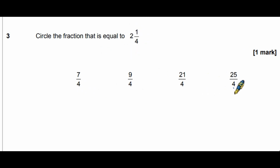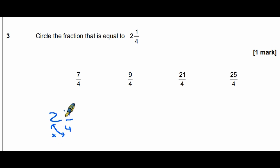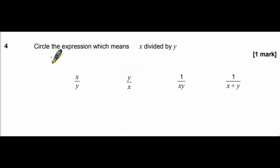These are all improper fractions with quarters on the bottom, so we're being asked how many quarters are in 2 and a quarter. We have one quarter already. To find how many quarters are in the two whole ones, we multiply 2 by 4 to get 8, then add the one quarter we already have. So 8 plus 1 is 9, giving us 9 quarters.